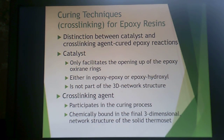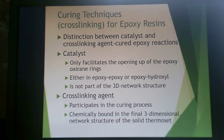There is some distinction that needs to be made between catalysts and cross-linking agents in epoxy resins. A catalyst only facilitates the opening of the epoxy ring — either epoxy-epoxy or epoxy-hydroxyl type systems. The catalyst does not become part of the 3D network; it just opens that ring. A cross-linking agent, or hardener, or curative participates in the curing process — it's chemically bound in the three-dimensional network structure of the solid thermoset. So it opens up that ring and becomes part of the three-dimensional network.